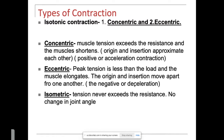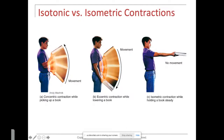Isometric contraction is when there's tension but the tension never exceeds the resistance, so there's no change in joint angle — like pushing against a wall or a parked car. You feel tension and contraction, but no movement. An example is holding a book out in a stationary position — shoulder flexors, elbow flexors, wrist and finger flexors are all engaged, but there's no change in joint angle.